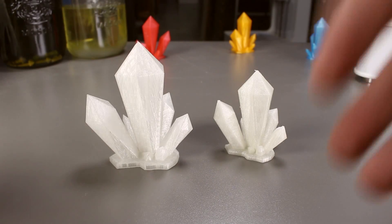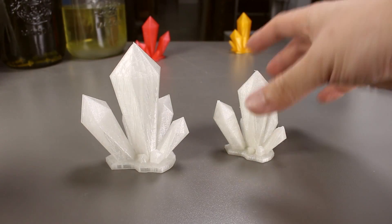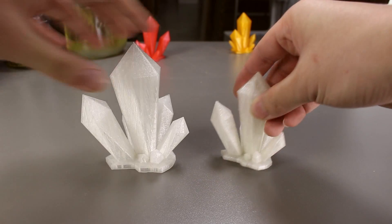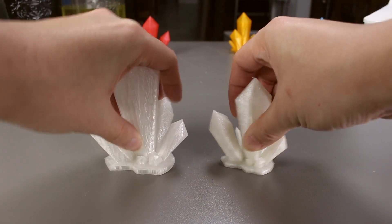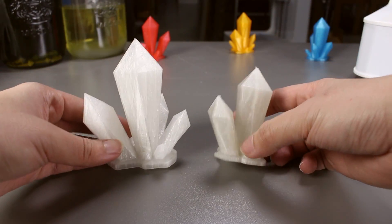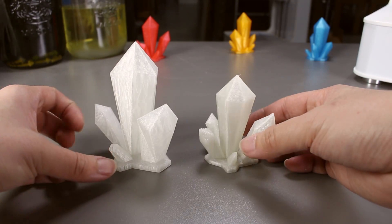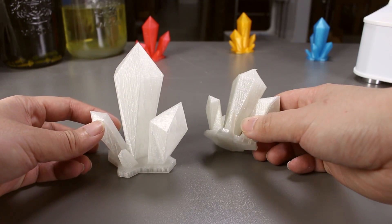From the outer appearance, it looks identical. But once we touch it, the PLA feels a lot more smooth compared to PETG which is more rough. You can feel the separate layers a lot more apparent.